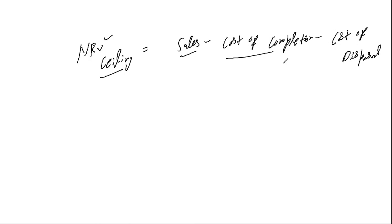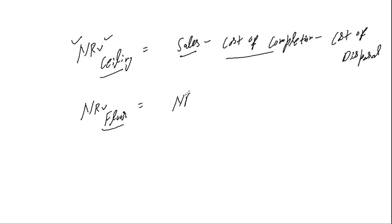All these values will be given in the question. You just pick them up and calculate NRV ceiling first. The next target is NRV floor. The formula for NRV floor is: NRV ceiling minus profit margin — where the profit margin is given in the question — and that gives you the NRV floor.